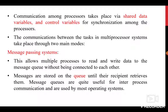Communication among processors takes place either through the message passing model or through the shared memory model. In the shared memory model, communication takes place through shared data variables and control variables in order to synchronize between the processors.